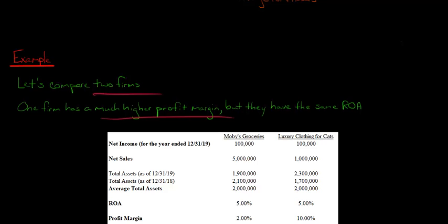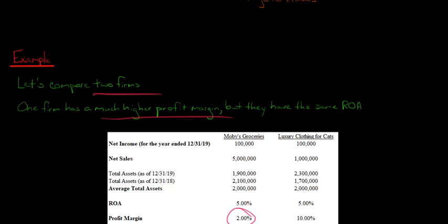So they each have the same ROA. Now let's look at the profit margin, which is net income divided by net sales. For Moby's Groceries, that's $100,000 divided by $5 million, so it's 2% — a pretty low profit margin. Basically, for every dollar in net sales for Moby's Groceries, two cents is going to ultimately end up in profit.